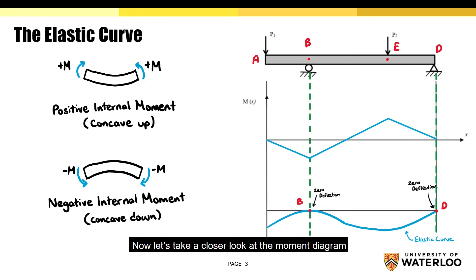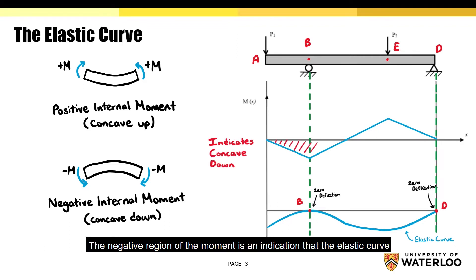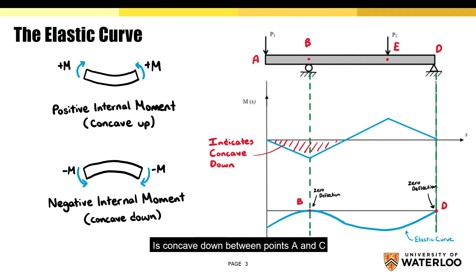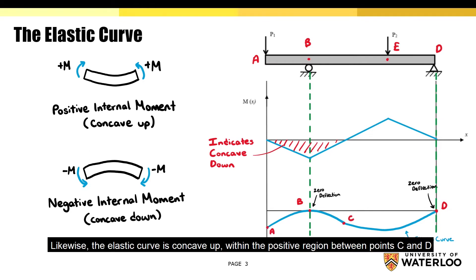Now let's take a closer look at the moment diagram. The negative region of the moment is an indication that the elastic curve is concave down between points A and C. Likewise, the elastic curve is concave up within the positive region between points C and D.